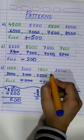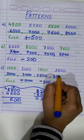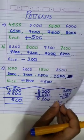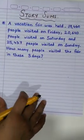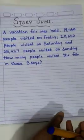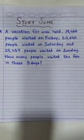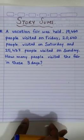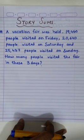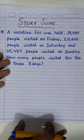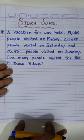Then add 1,000 which makes 3,500. In this way, addition and subtraction can be useful to form patterns. And now it's time to move on to the story sums. In practical life, we come across situations where we have to add or subtract to calculate the answers we need. Story sums are examples of such situations.